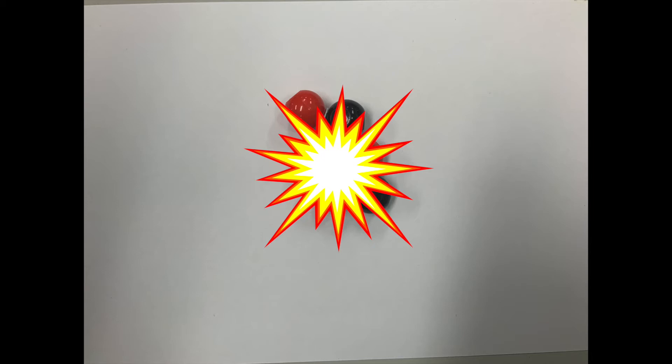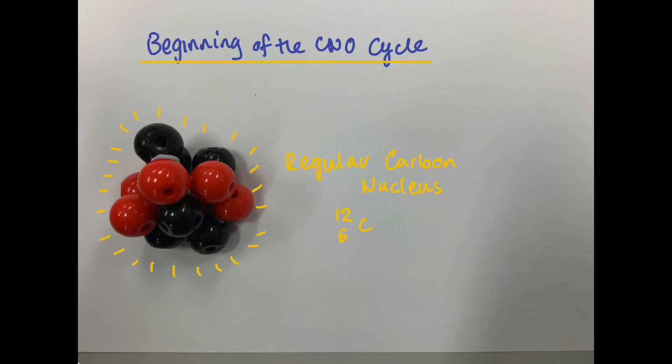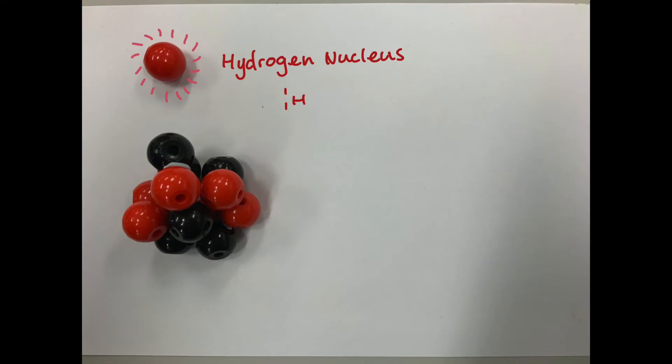The carbon-nitrogen-oxygen cycle, or CNO cycle, begins with regular carbon, or carbon-12 nucleus, which collides with a proton to form light nitrogen, releasing a gamma ray in the process.